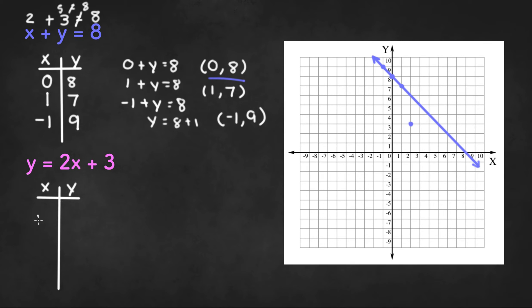So let's start off with 0. So 2 times 0 plus 3 is equal to y. 2 times 0 is 0 and 0 plus 3 is 3. So our first coordinate we're going to graph is 0, 3. And that will be right here.